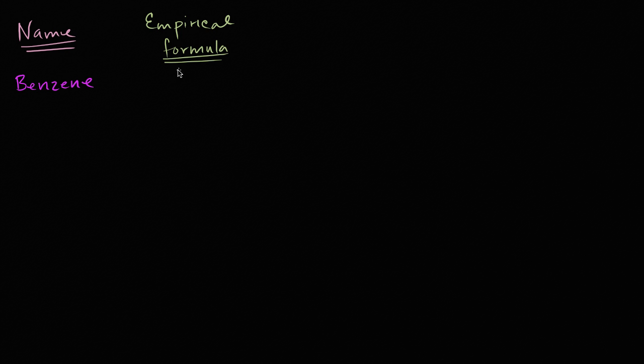And the reason why we call what I'm about to write down an empirical formula is because early chemists, they weren't able to look at just one molecule, but they could at least come up with, they could observe the ratios that it seemed of the different elements that they had in a molecule.